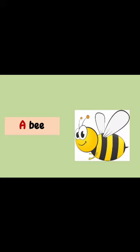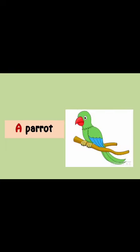This is a bee — its Hindi meaning is Madhu Makkhi. Its beginning letter is B, which is a consonant, so we use A here. This next picture is a parrot. Parrot means Tota. The beginning letter of parrot is P, which is a consonant, so we use A. We say: a parrot.